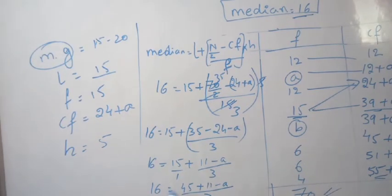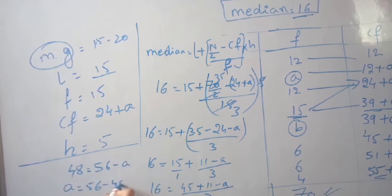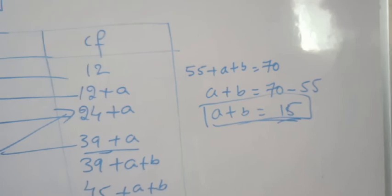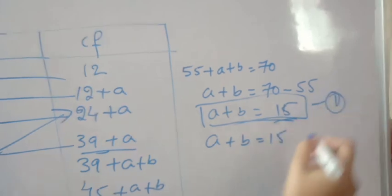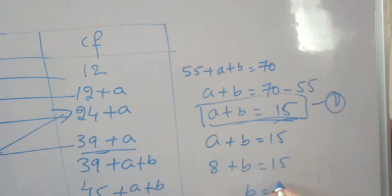So 16 = (45 + 11 - A)/3, which gives 16 × 3 = 48 = 56 - A. Therefore A = 56 - 48 = 8.